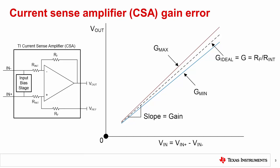Gain curves can be visualized with the plot on the right. Gain is simply the slope of the output versus the input. The worst-case maximum and minimum gain curves set the bounds of possible linear gain error in the Current Sense amplifier. Note that this plot assumes perfect linearity.